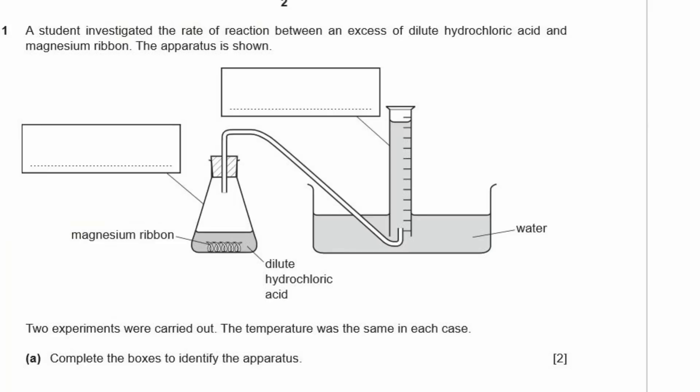Question 1. A student investigated the rate of reaction between an excess of dilute hydrochloric acid and magnesium ribbon. The apparatus is shown. So, they put magnesium ribbon in acid, and you get bubbles coming up through here, being collected in this container here. Alright, collected under water, so it just displaces the water out of the way. Two experiments were carried out. The temperature was the same in each case. A. Complete the boxes to identify the apparatus. Alright, so the first box up here is, this is known as a measuring cylinder.